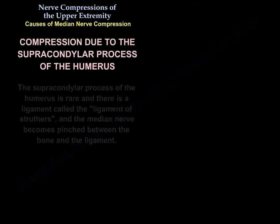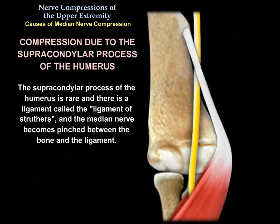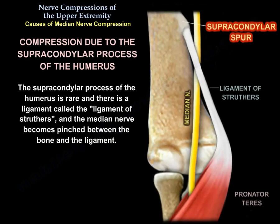The supracondylar process of the humerus is a rare cause. There is a ligament called the ligament of Struthers, and the nerve gets pinched between the bone and the ligament.